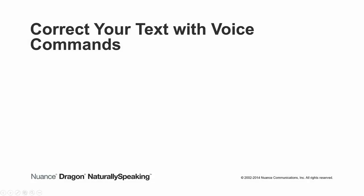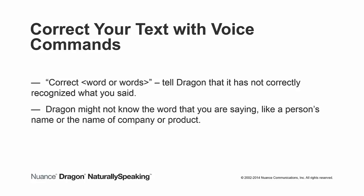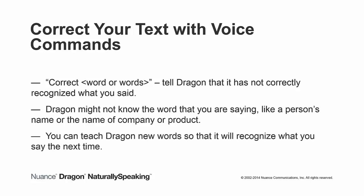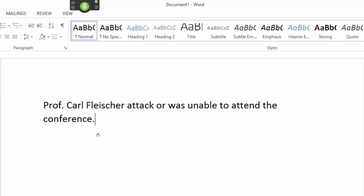As you use Dragon, it may be necessary at times to indicate to Dragon that it has not transcribed what you said correctly. You can use the correct command, followed by the word or words that Dragon has transcribed incorrectly. Dragon might not correctly transcribe what you are saying because it might not know the word — like a person's name or the name of a company or product. Using the correct command, you can teach Dragon new words so that it will recognize what you say the next time. I'll use a proper name that Dragon does not yet know: Professor Carl Fleishhacker was unable to attend the conference. Now I'll use the correct command, followed by the word or words that appear on the screen that Dragon has transcribed incorrectly.